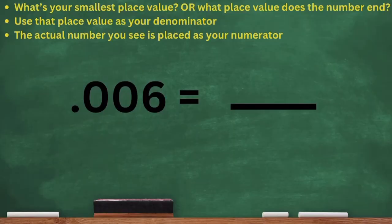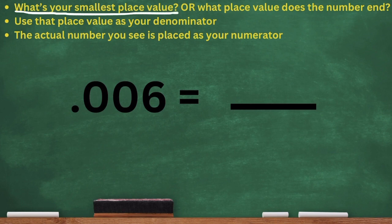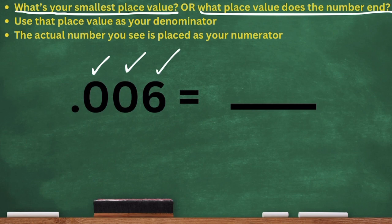Today we are going to be converting decimals into fractions. If you look at the top of the board, it says what's your smallest place value or what place value does the number end? So if you take a look, we have 0.006. We have three digits, so we have to ask ourselves, what is the last digit in this number?